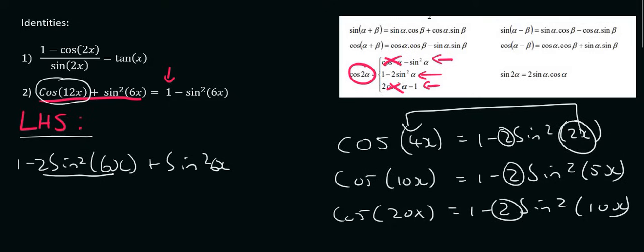So 1 minus 2 sin squared 6x plus sin squared 6x just gives us 1 minus sin squared of 6x. Because minus 2 plus 1 is just minus 1 because these are the same. And so there we have our answer already.